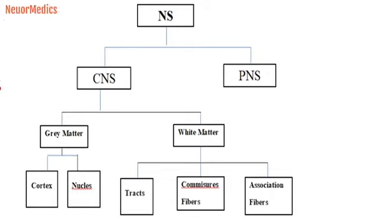What is cortex? The part of the gray matter that is applied on the surface of the CNS is called cortex. And the pieces of gray matter that are embedded in the central nervous system and are surrounded by white matter are called nuclei.